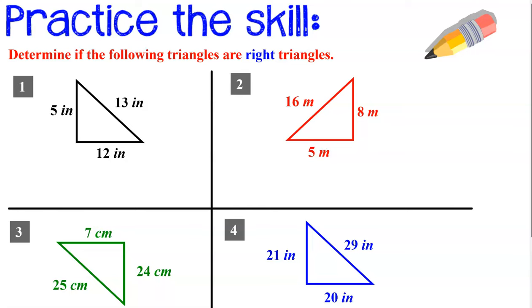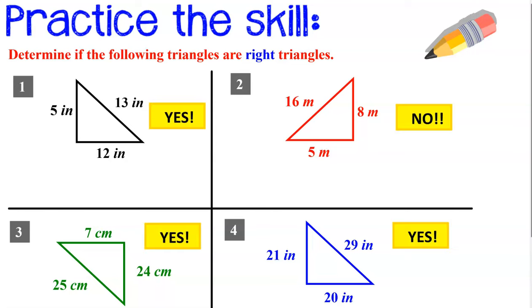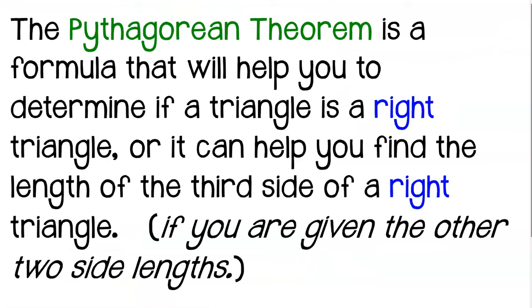Let's see how you did. Now let's move on to the second part of the lesson. The Pythagorean Theorem is a formula that can help you determine if a triangle is right, or if you already know it's a right triangle, it can help you find the length of the third side — but you have to be given the other two.